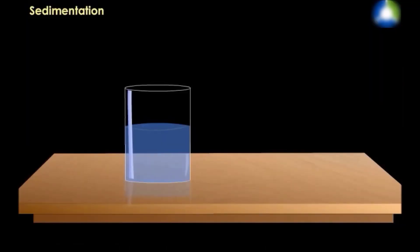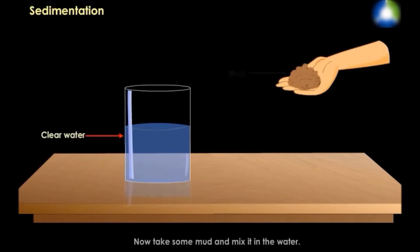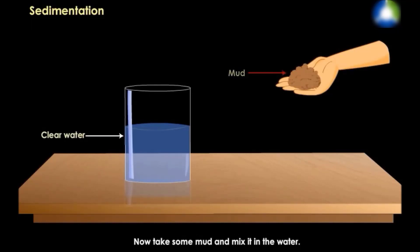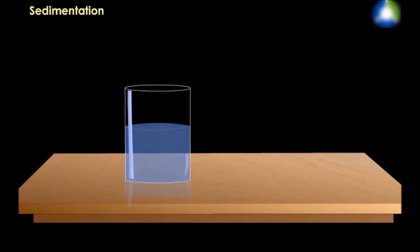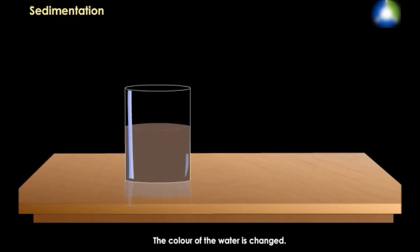Now we will discuss these methods one by one. First is sedimentation. In this method, take some clear water in a beaker. Now take some mud and mix it in the water. The color of the water changes. Now keep it undisturbed for some time. The insoluble particles settle down at the bottom.